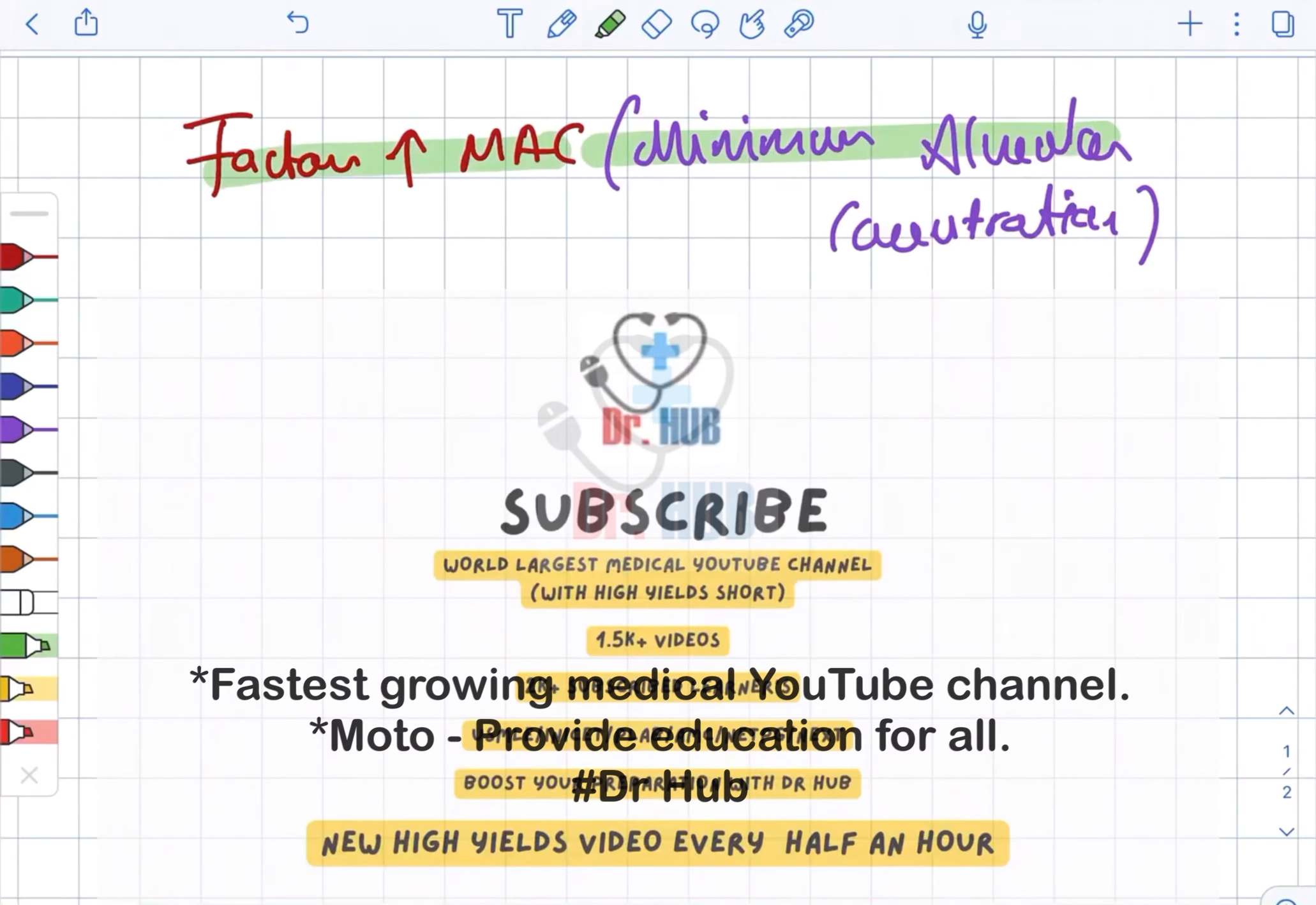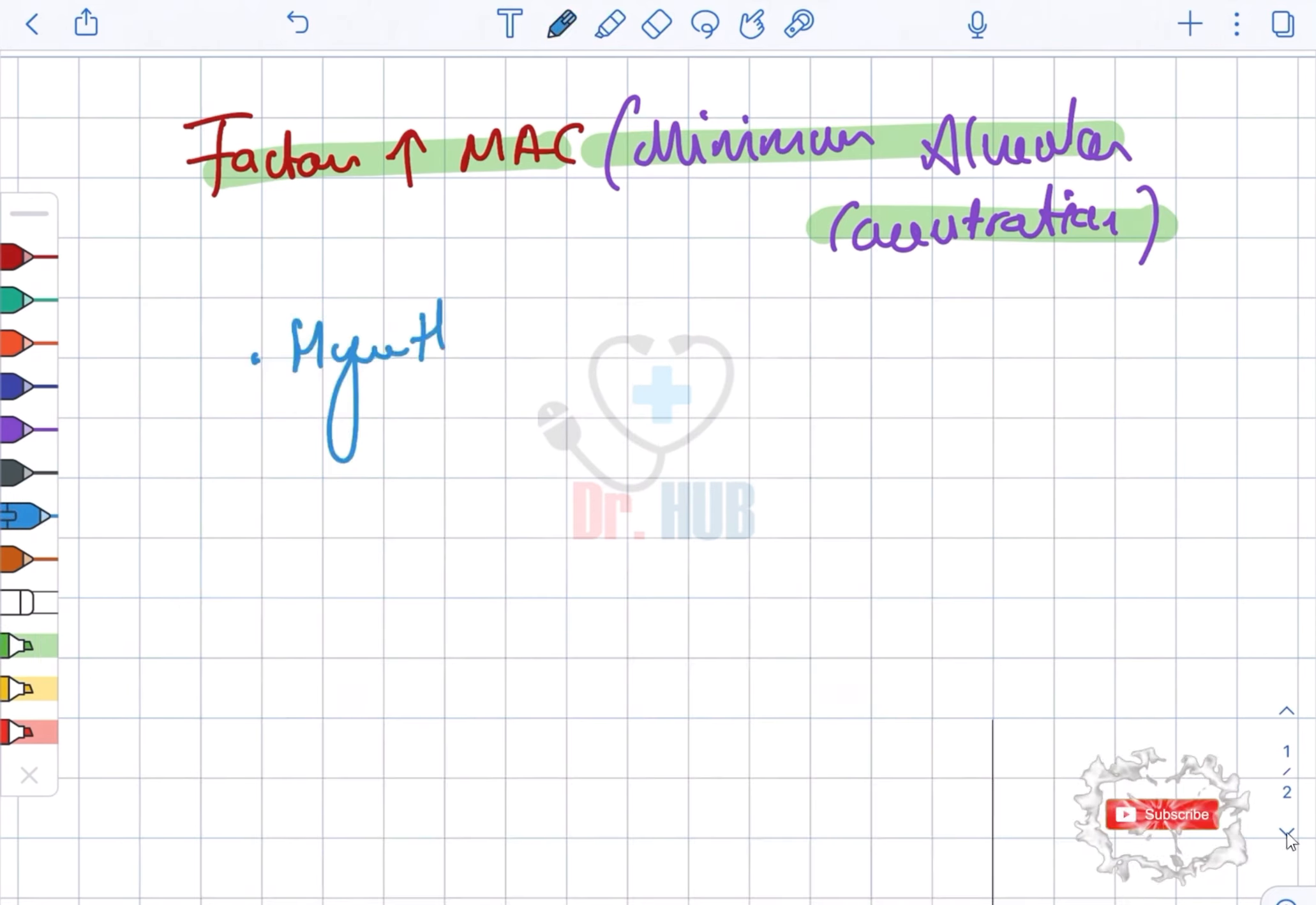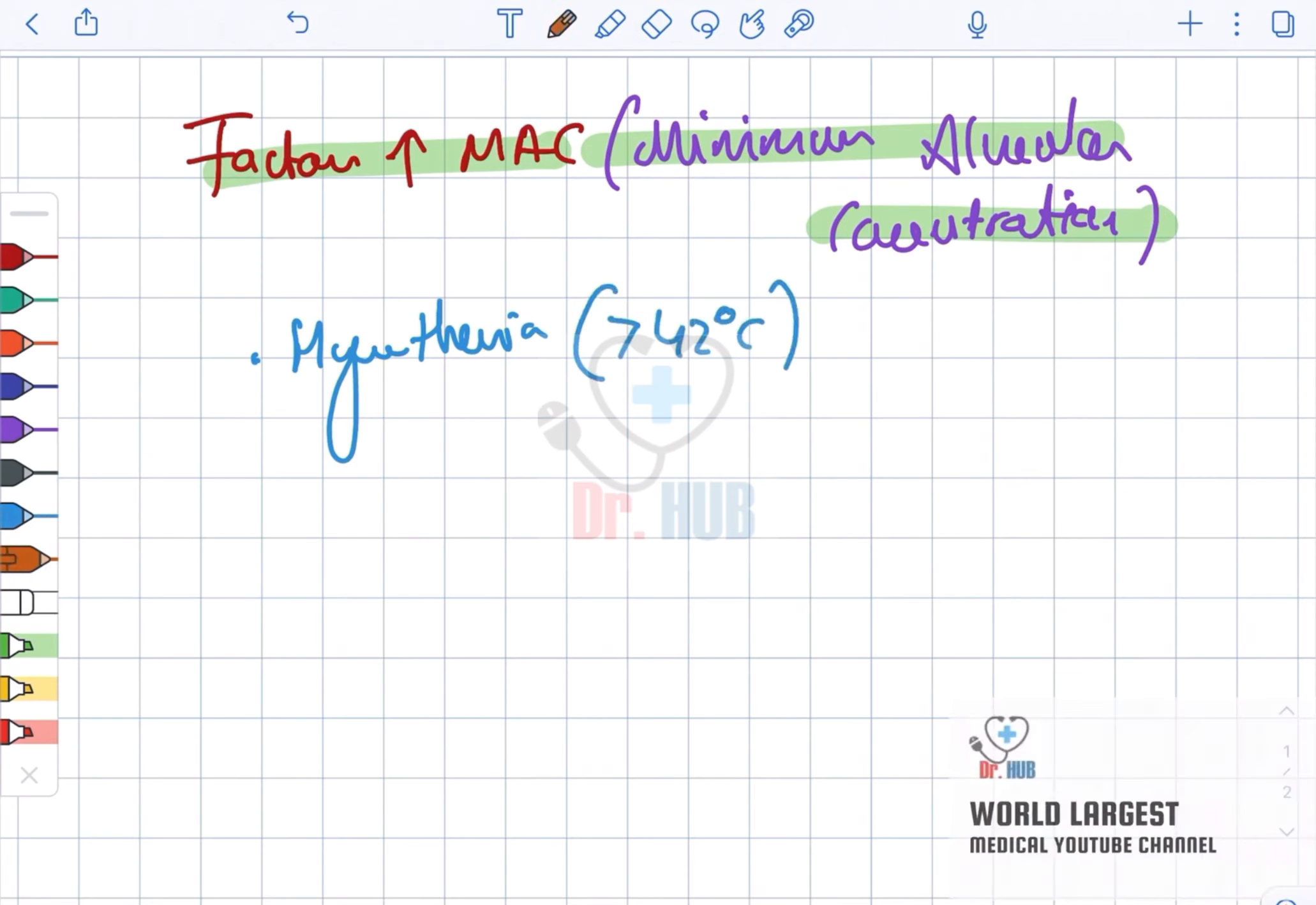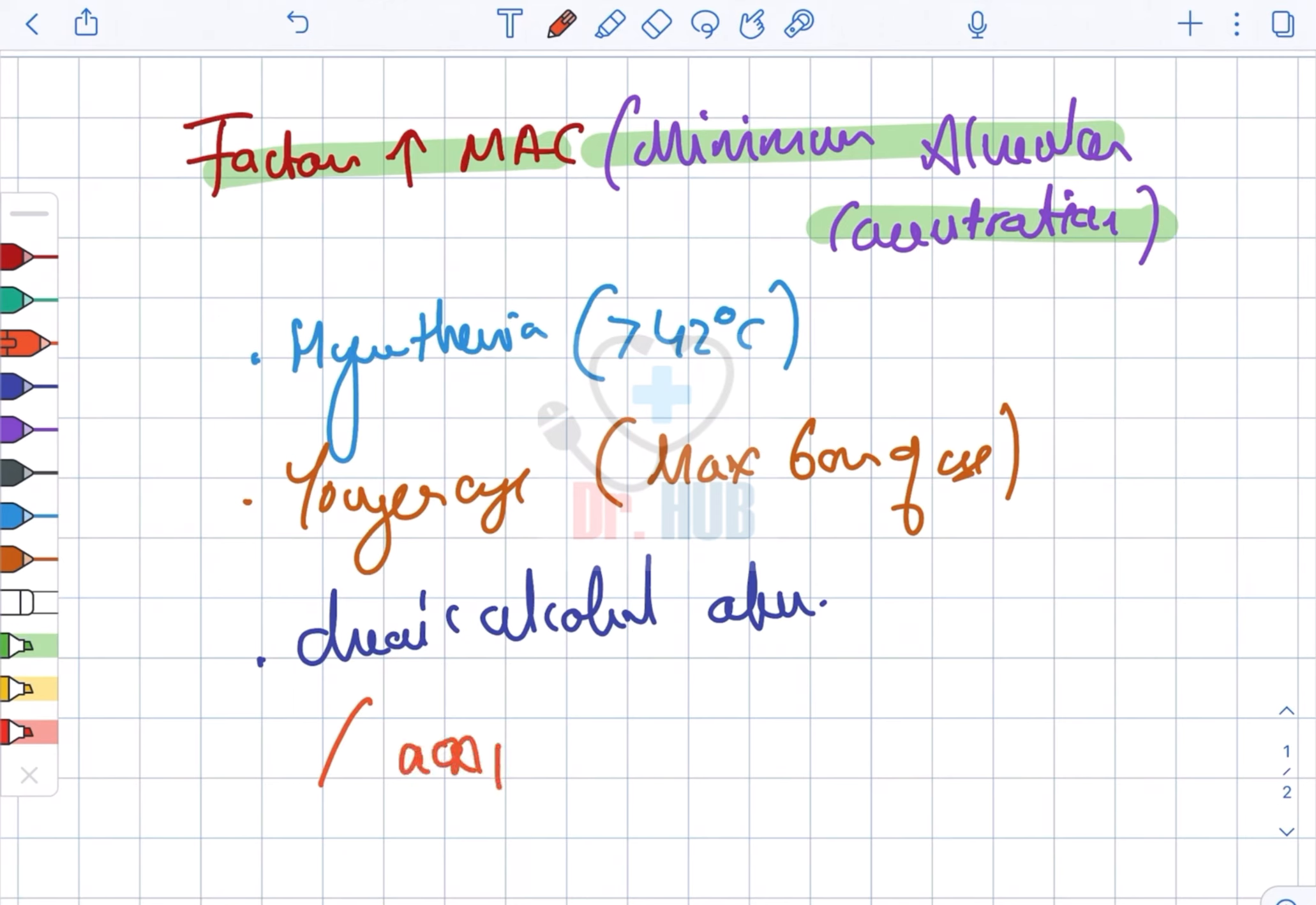Factors which increase MAC, the minimum alveolar concentration: firstly, hyperthermia greater than 42 degrees Celsius. Next, in cases of younger age groups, with maximum at six months of age. Then comes chronic alcohol abuse.